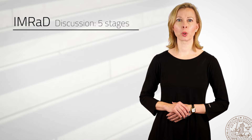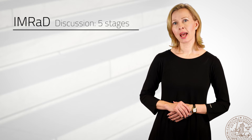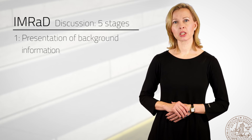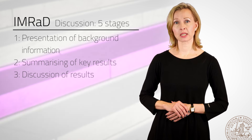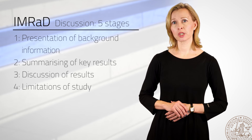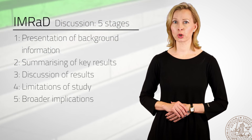Just as it's possible to determine certain set moves in the introduction, a pattern of moves can also be determined in the case of the discussion. John Swales and Christine Feak have mapped this out into five stages: Move 1 is the presentation of background information (present in some but not all papers); Move 2 is the obligatory summarizing of key results; Move 3 is where the actual discussion of results takes place; Move 4 is where it might be necessary to mention the limitations of your study; and Move 5 is the place to suggest further research or broader implications.